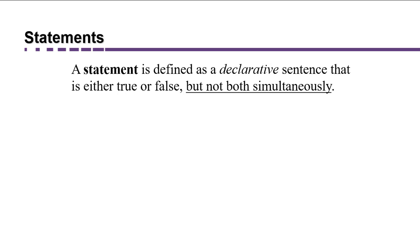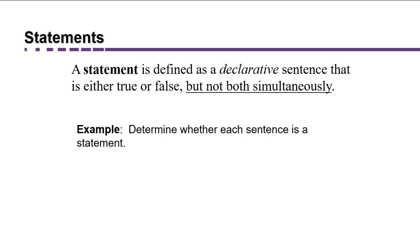A statement is defined as a declarative sentence that's either true or false, but not both simultaneously. So let's determine whether each of these sentences is considered a logical statement. Part A: The earth revolves around the sun. This is a declarative sentence, and we can determine whether it's true or false, but it can't be both true and false simultaneously, so it's a logical statement.